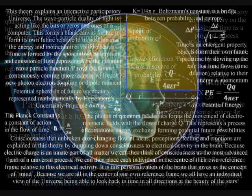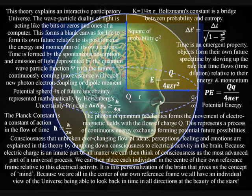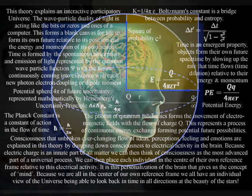This theory gets around this problem by explaining consciousness as electrical activity that is aware of its own electrical potential. This is possible because the light photon is the carrier of the electromagnetic force. Therefore, electrical activity in the brain is always in the center of its own reference frame.